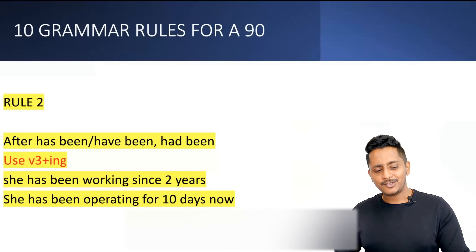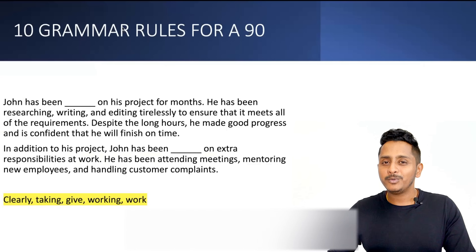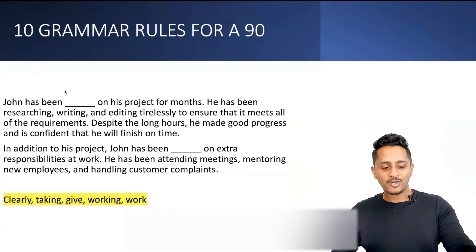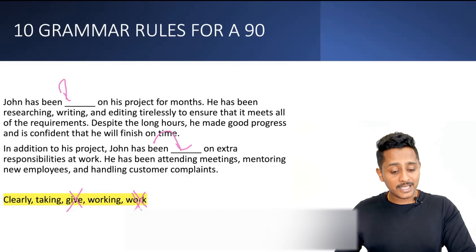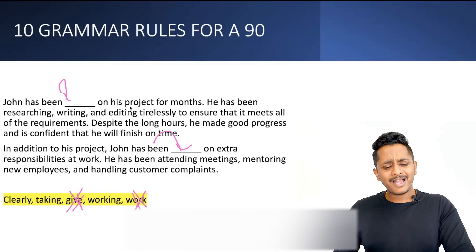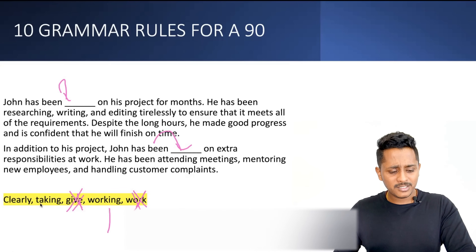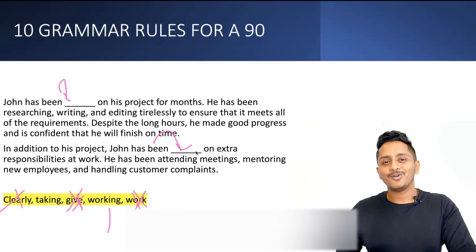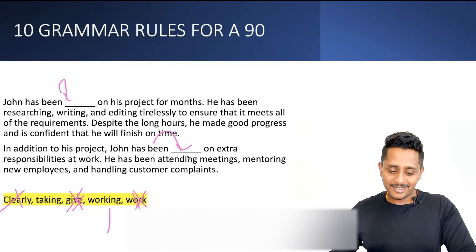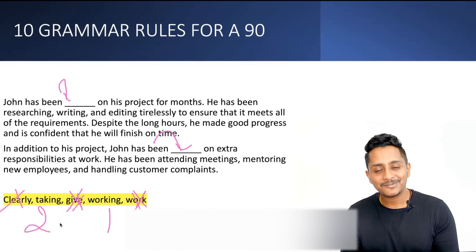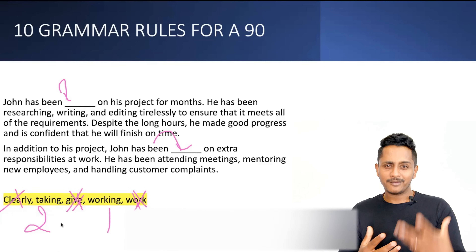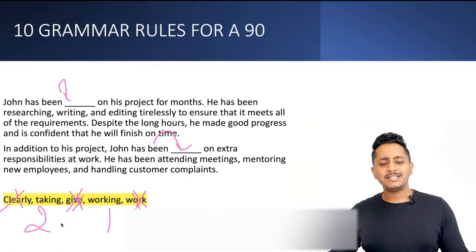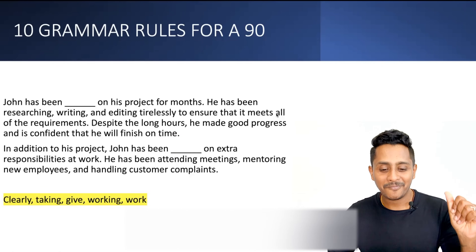'Ed' can come and verb 3 — we'll see that in the next rule. For example: 'John has been dash on his project for months' — 'give' and 'work' are ruled out. After 'has been', 'giving', 'working', or 'given' — this is our rule. 'John has been working on his project' and 'John has been taking on responsibilities' — 'has been taking' is correct. When you know grammar, you can eliminate confusing options and find the answer at lightning speed.